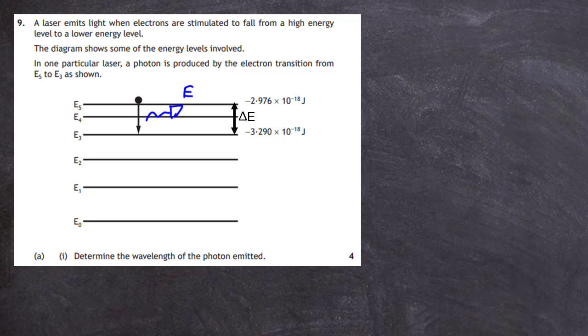We can say that delta E, the energy gap, will be the energy of the photon and equals HF, where H is Planck's constant and F is the frequency of the photon produced. We're asked to find the wavelength, so we've got to change the frequency into the wavelength. We can write delta E equal to HC divided by lambda.